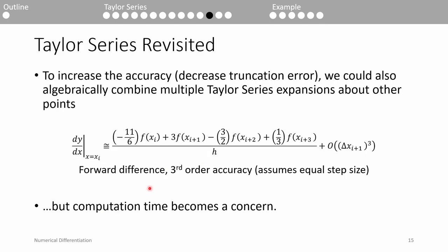It's possible to derive numerical differentiation schemes which are way more accurate than the ones we've covered so far. We can do so by combining multiple Taylor series expansions about other points. I'm not going to do an example of this because it's time consuming, algebraically difficult, and not worth it for this class, but I want you to be aware that you can make more accurate approximations by using more data points. This formula here is the third order forward difference which uses the three points in front of the current data point. The truncation error is on the order of the cube of the step size. If you halve the step size, the truncation error would be cut by approximately eight.